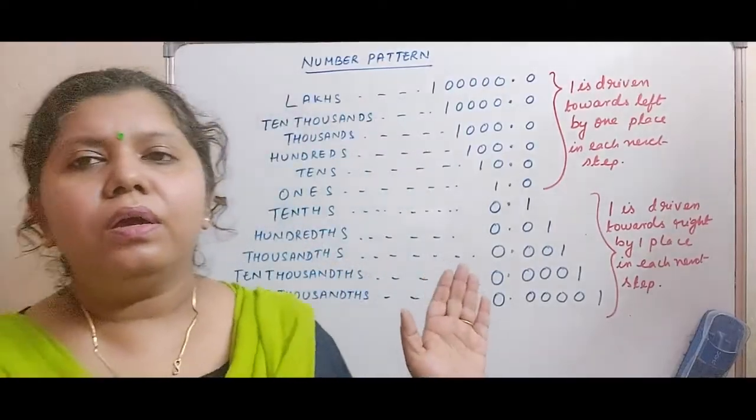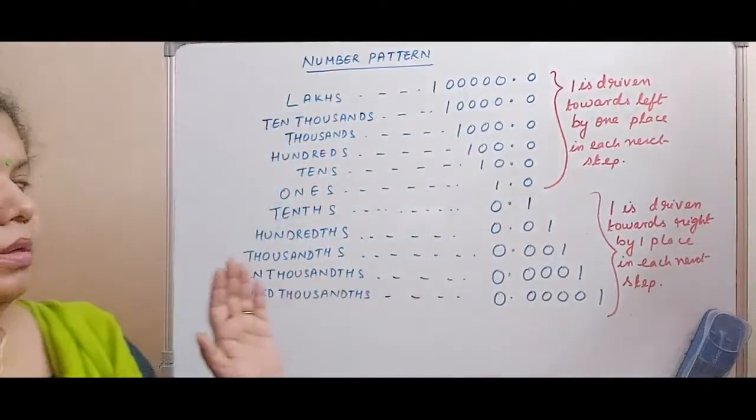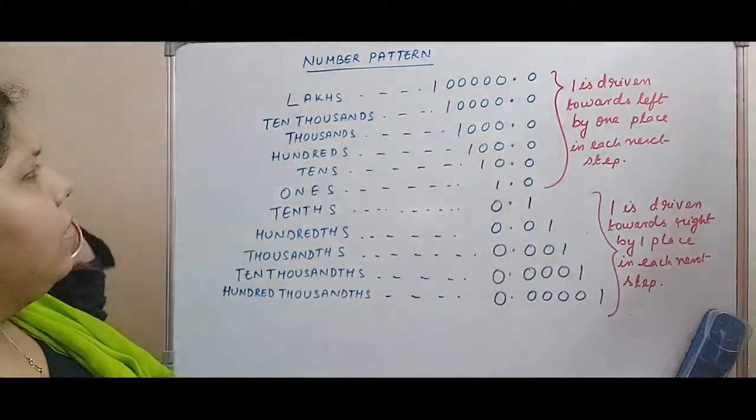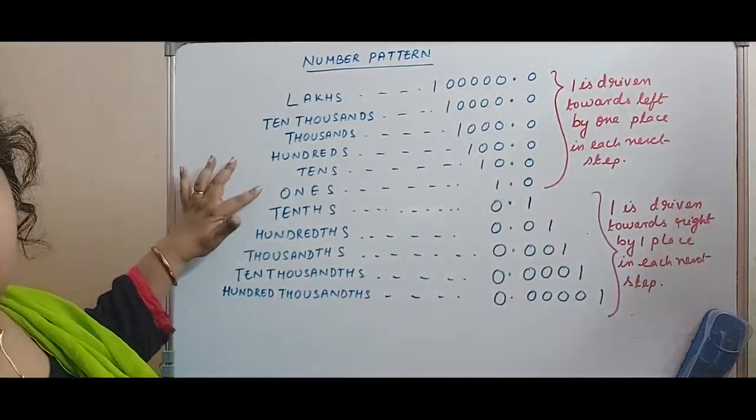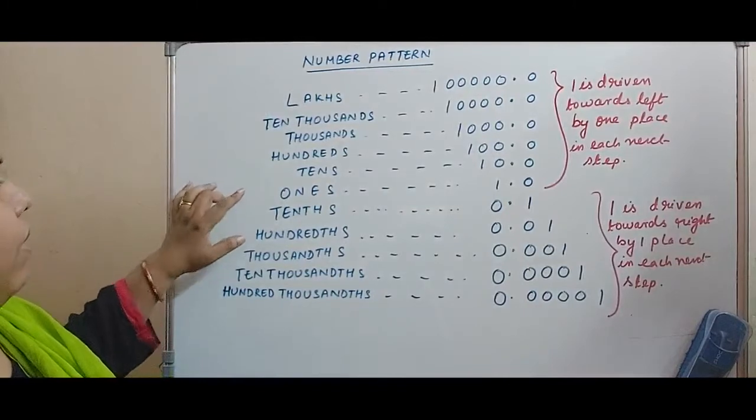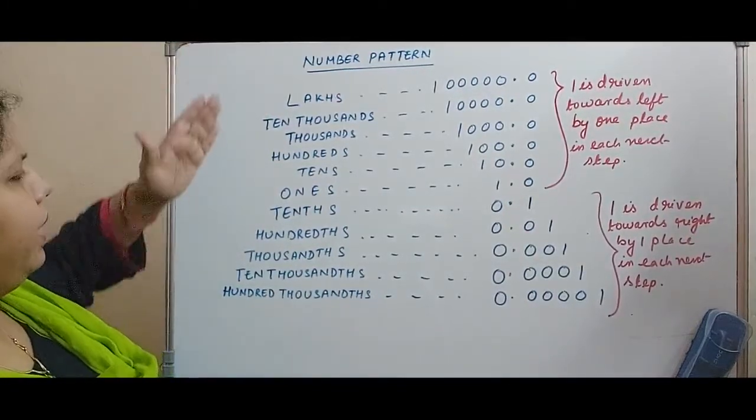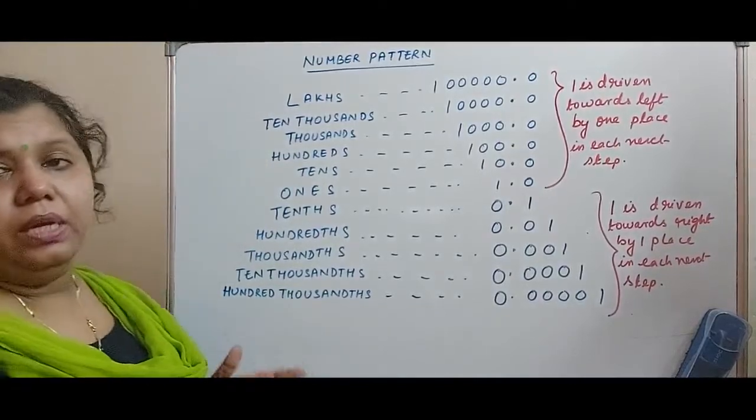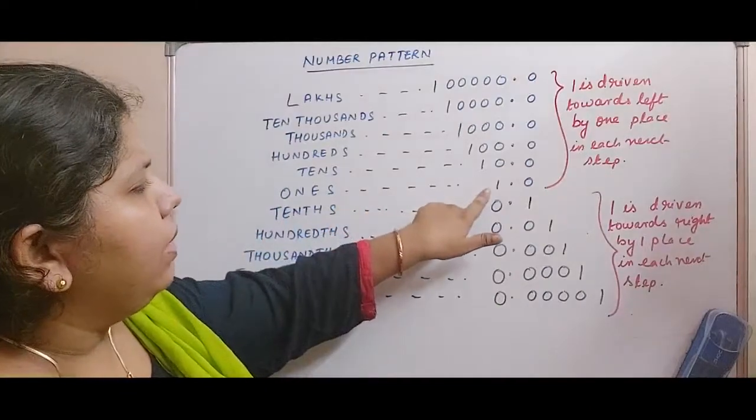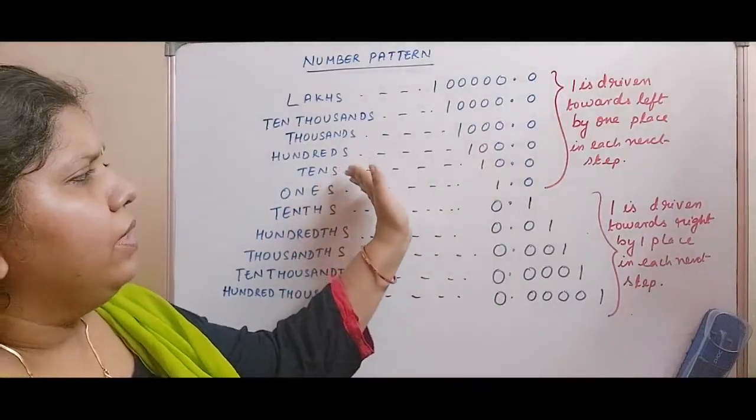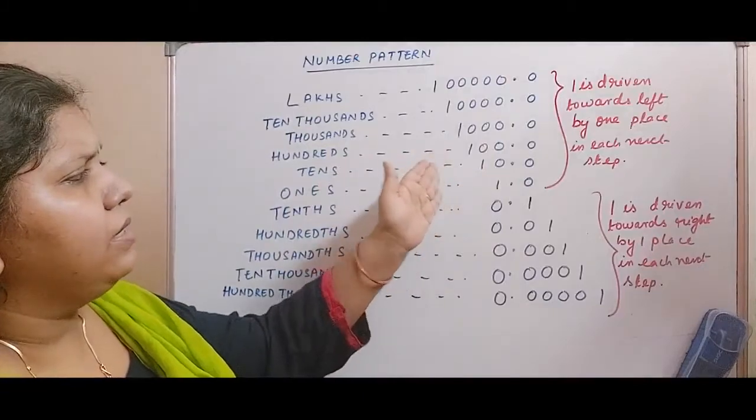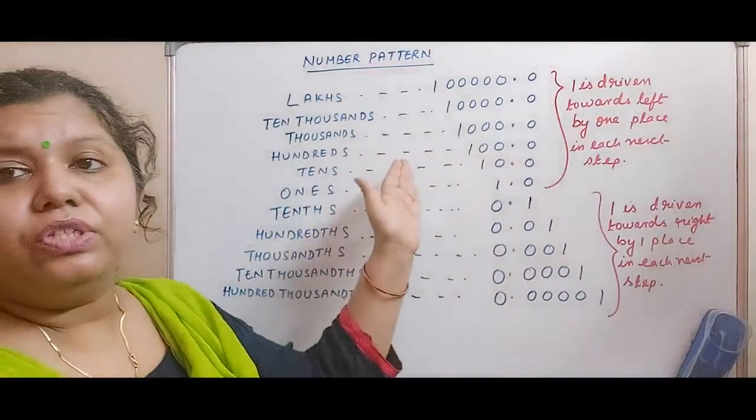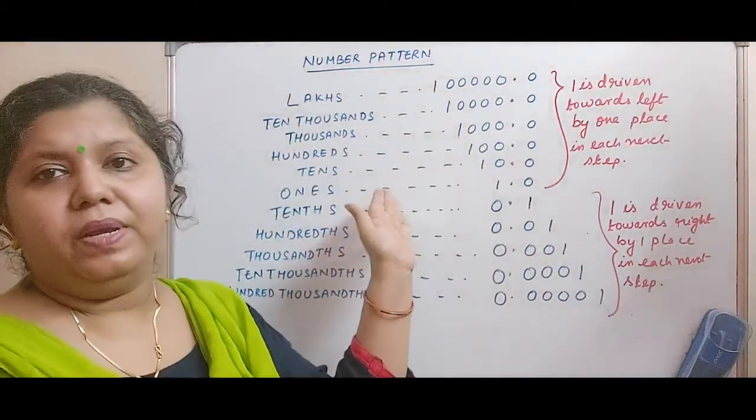Now here what are we observing? Look at it very clearly. The thing is we have started from ones. This is in between you can see. From ones as we move up like ones then tens, 100, 1000, 10,000, lakhs, what is happening? This number 1, can you see it is driven more towards left. By each step upwards, you will see it is shifting towards left, shifting towards left by one place.